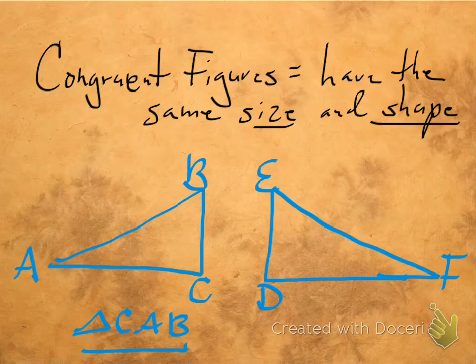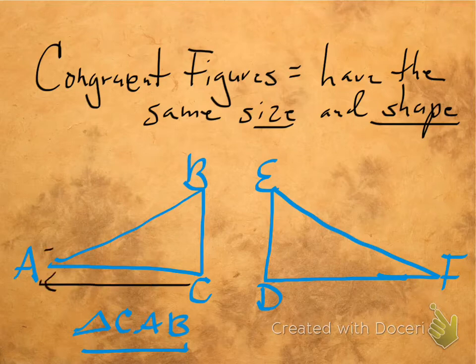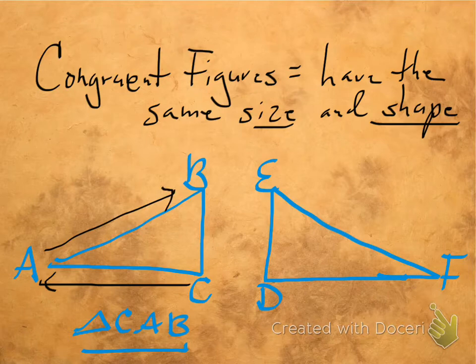I want you to notice what we're doing here with CAB. We're going from the thing that looks almost like a right angle, maybe it is, we're going out to the really small angle, and then we're going up to the top angle. So when I come over here to this triangle, we want to do it in exactly the same order.